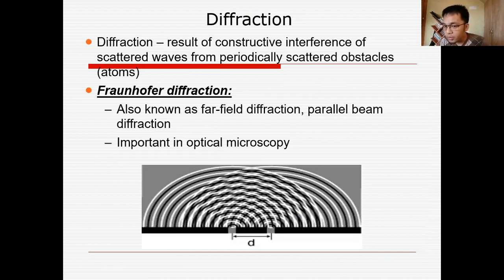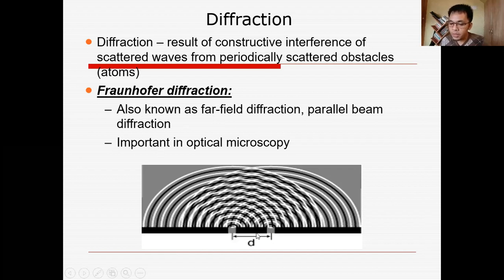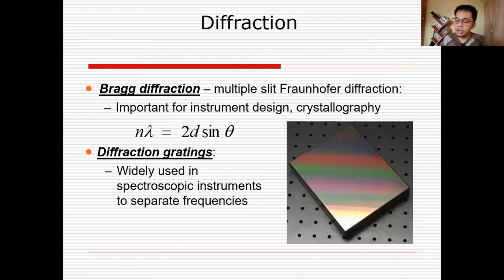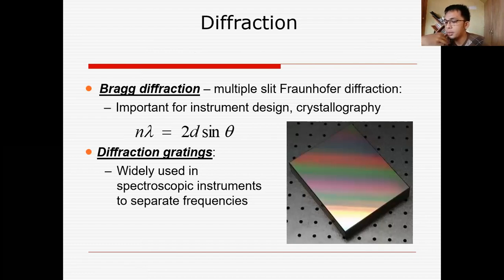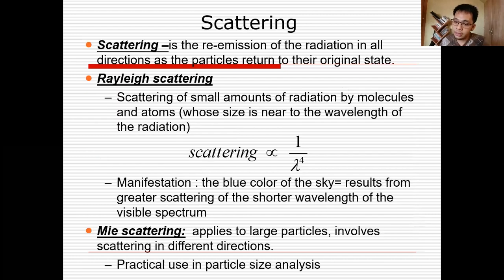The next interaction is diffraction — the result of constructive interference of scattered waves from periodically arranged surfaces. We have the Fraunhofer diffraction, also known as far-field or parallel beam diffraction, which is important in optical microscopy. The formula used is nλ = 2d sinθ. Diffraction gratings are widely used in spectroscopic instruments to separate frequencies — they were the older method used before modern monochromators to isolate one specific type of light in electromagnetic radiation.